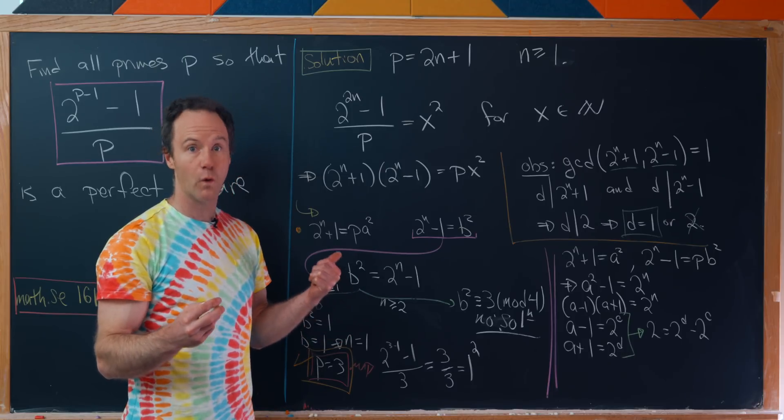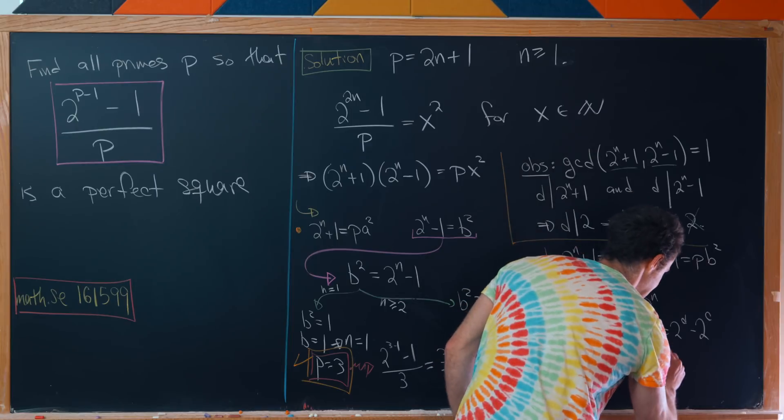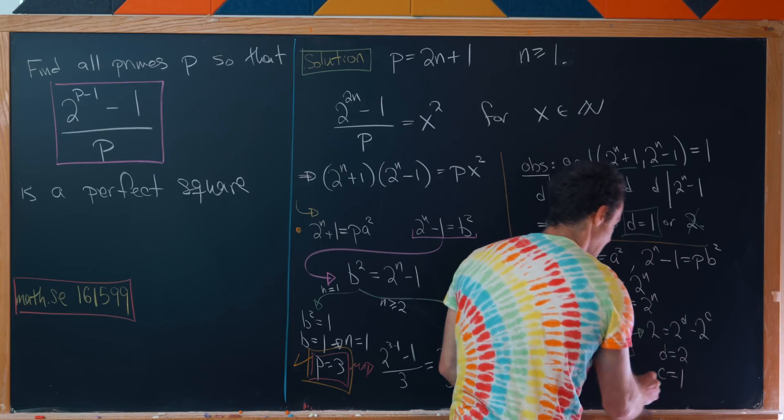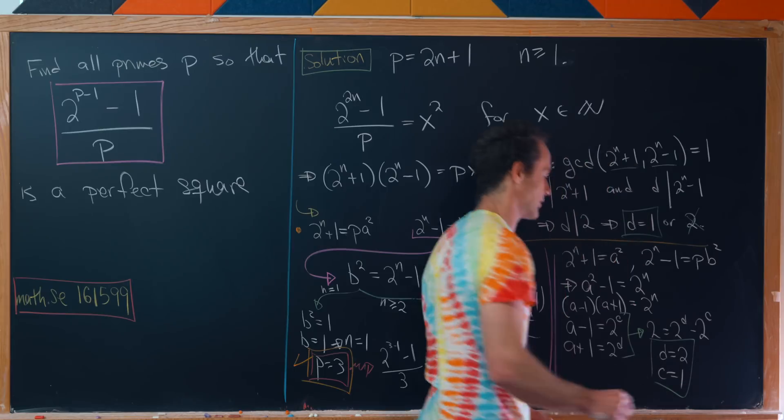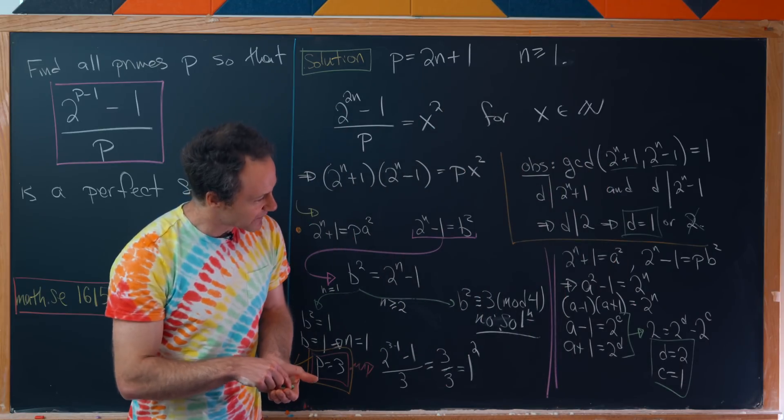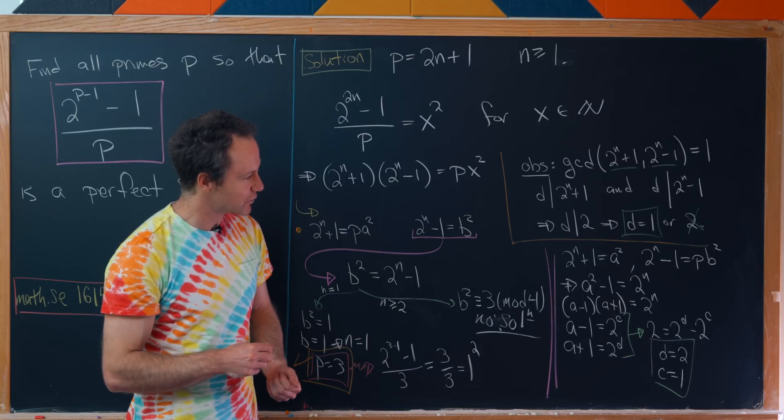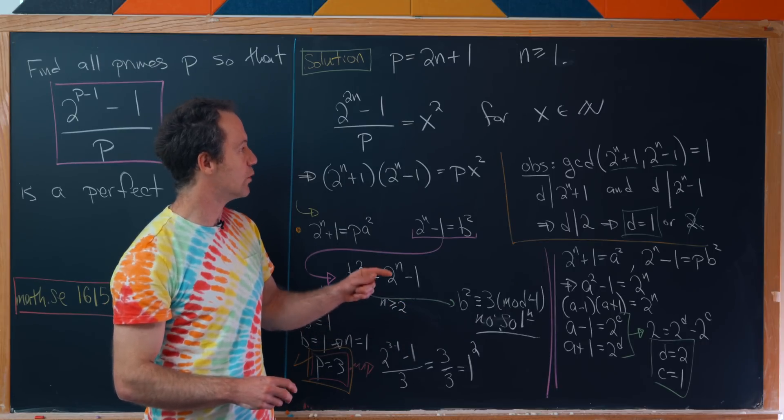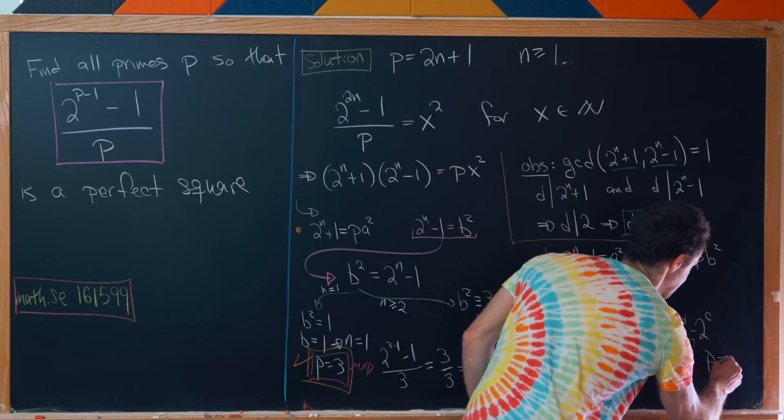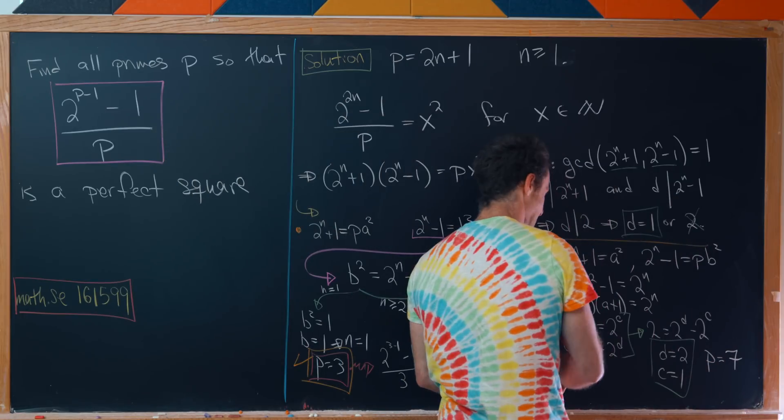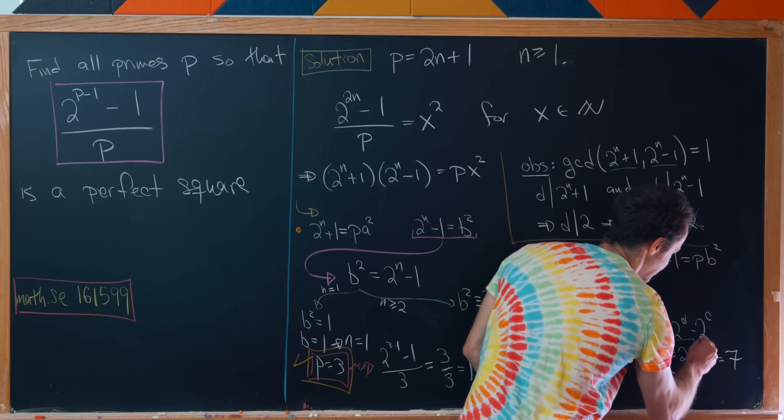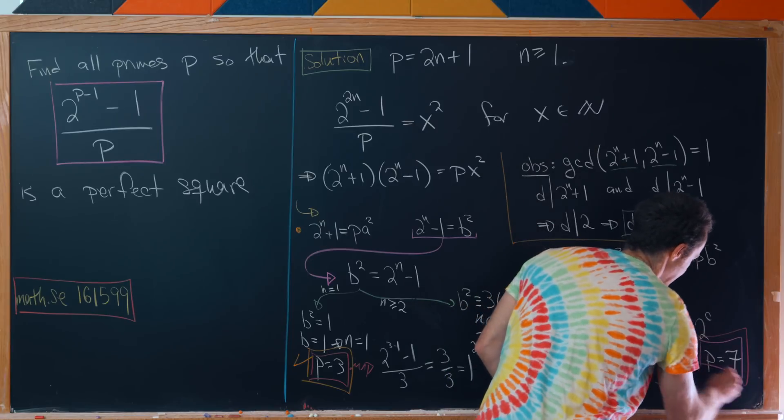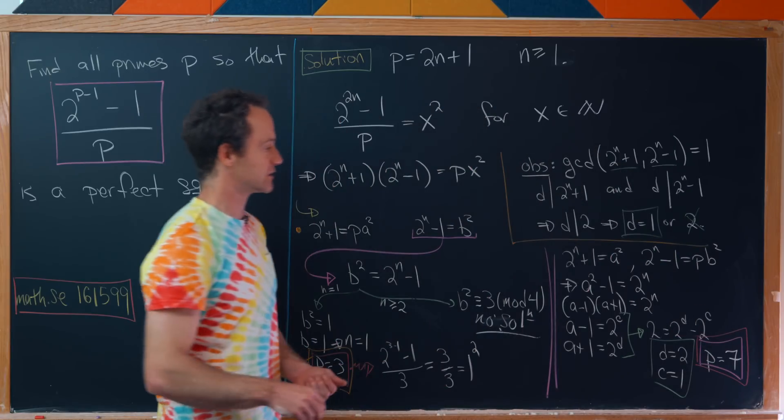Now we want to look for all powers of 2 that are separated by 2 units. There's only one case where that happens: when d equals 2 and c equals 1. Otherwise the powers of 2 are separated by more than 2. So we've got d equals 2 and c equals 1. Pulling that back into what p would be, we'll have that p equals 7.